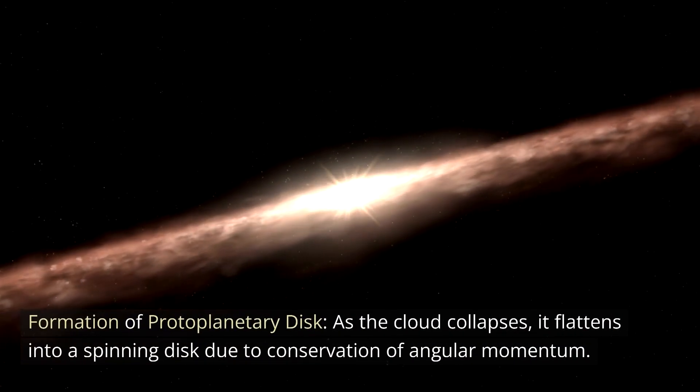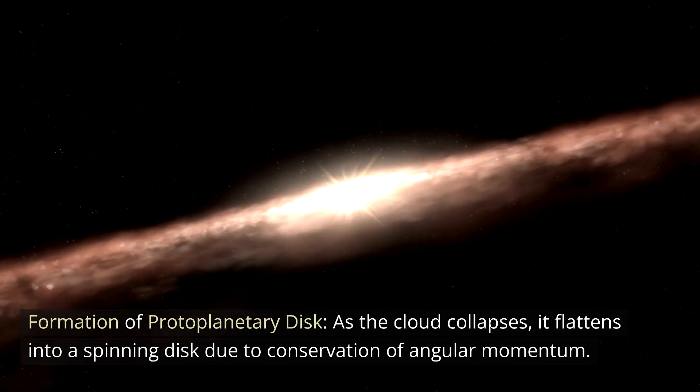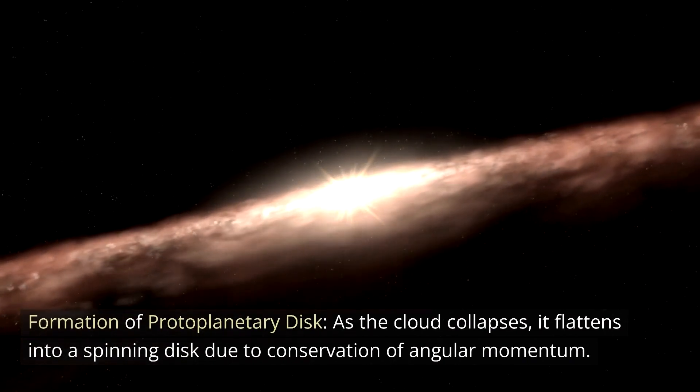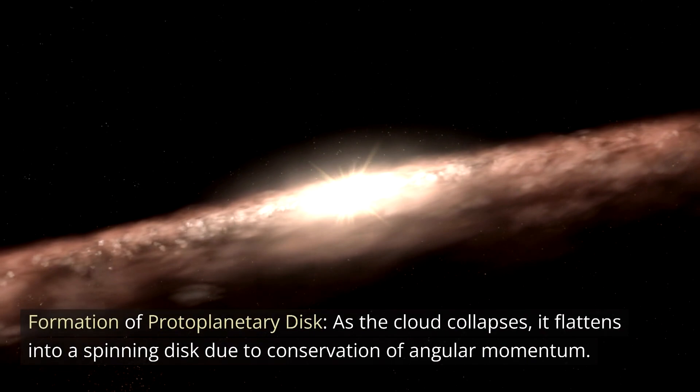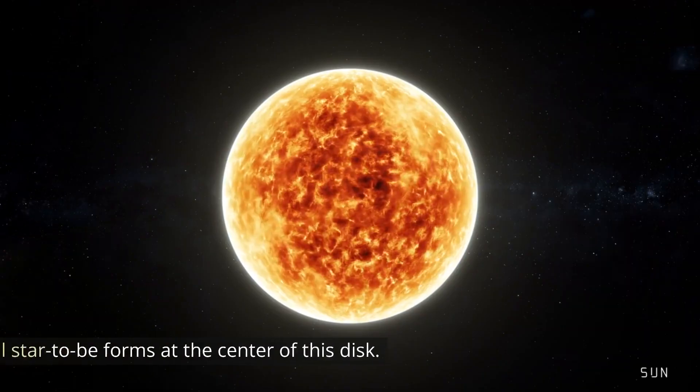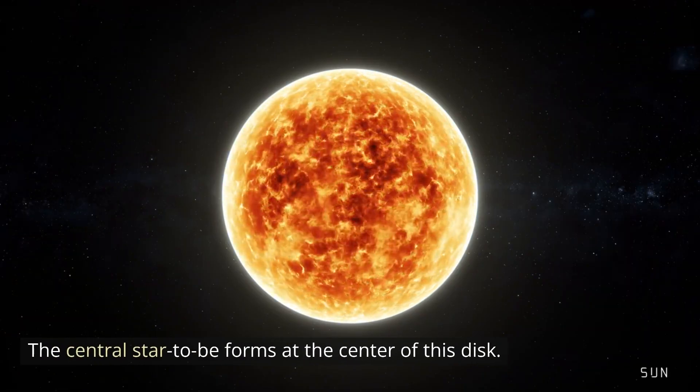Formation of protoplanetary disk: As the cloud collapses, it flattens into a spinning disk due to conservation of angular momentum. The central star-to-be forms at the center of the disk.